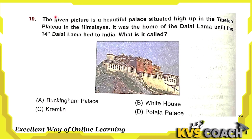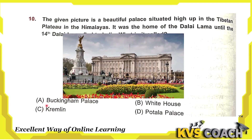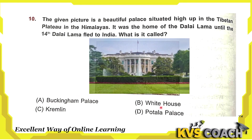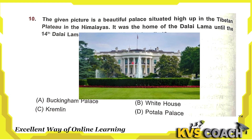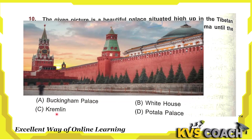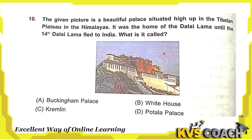Next question: the given picture is a beautiful palace situated high up on the Tibetan Plateau in the Himalayas. It was the home of the Dalai Lama until the 14th Dalai Lama fled to India. What is it called? Option A is Buckingham Palace, situated in the United Kingdom. Option B is the White House, situated in the United States. Option C is the Kremlin, situated in Russia. Option D is Potala Palace. So the right answer is option D, Potala Palace.